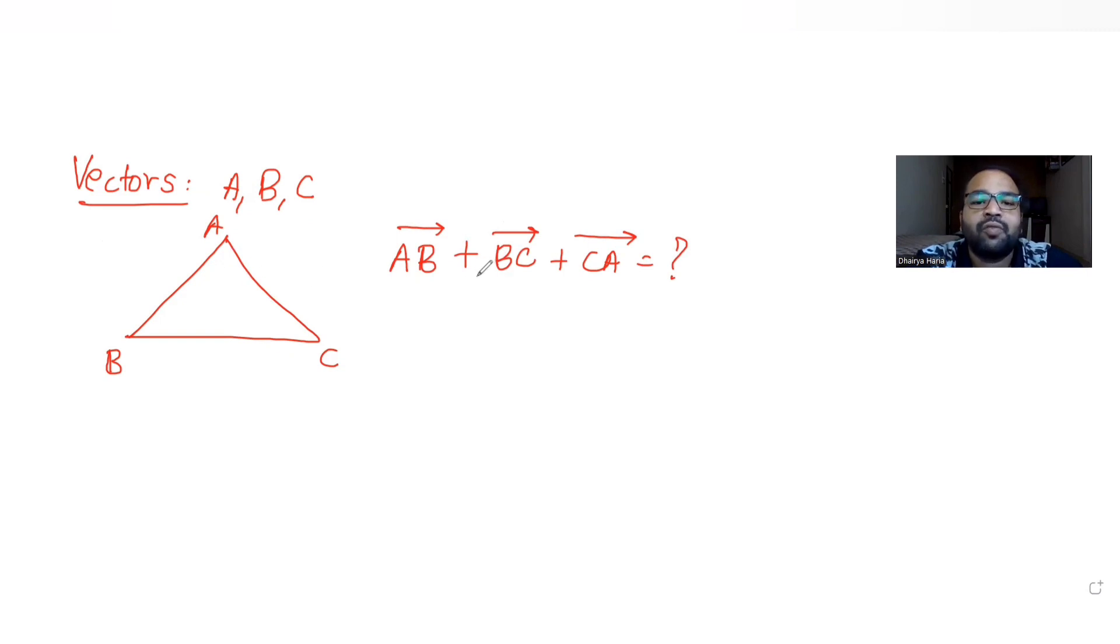If I see the solution for this, starting off, first thing we know by triangle law of vector addition, I can apply that idea that says AB vector plus BC vector is equal to AC vector.